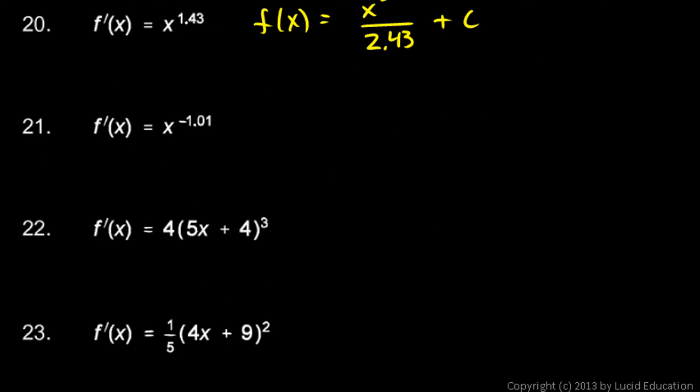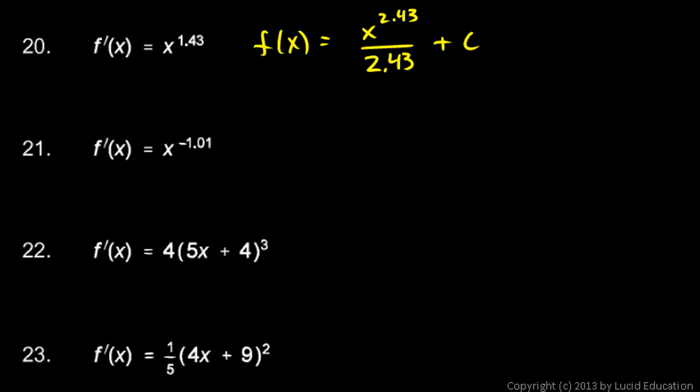Okay, and a few more. Number 21, f prime of x is x to the negative 1.01. So f of x is going to be x to the power of this number plus 1. And negative 1.01 plus 1 is negative .01. So it's x to the power of negative .01 over the new power, so that's going to be over negative .01. And that's a 100th there, .01. So let's simplify this or write it in a more usual fashion. This would be negative 100x to the negative .01 plus c.